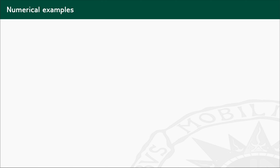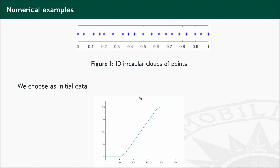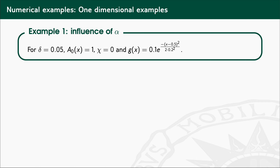The numerical examples shown to demonstrate the efficiency of the method for solving the spatial Solow model use irregular clouds of points as seen on screen. We choose as initial data for K the following step function. In the first example, we study the influence of the order of the fractional derivative alpha, with the depreciation rate chosen to be 0.05, initial data for A equal to 1, and assuming no induced motility of capital by technological progress.